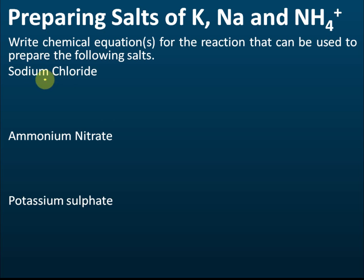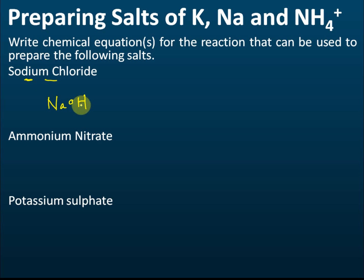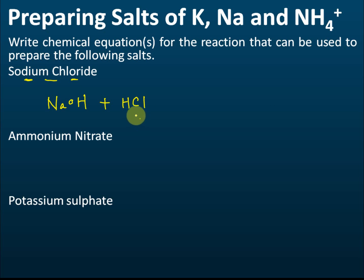To prepare sodium chloride, we use acid and alkali. Since we need sodium in our salt, the alkali must be sodium hydroxide — not potassium hydroxide or ammonium hydroxide. We need chloride in our salt, so we use hydrochloric acid, since hydrochloric acid contains chloride ions. You must carefully choose your reactants based on the ions you need in the final salt.